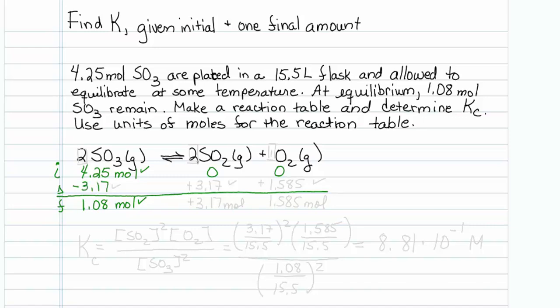The delta row is always locked in stoichiometry. So if SO3 is minus 3.17, then SO2 has to be plus 3.17 because we're making it — the coefficients are the same, 2 to 2. On the other hand, the oxygen coefficient is 1, so it has to be half of 3.17, which is plus 1.585. The stoichiometry of the reaction is 2 to 2 to 1, and the stoichiometry of the delta row is 2 to 2 to 1.